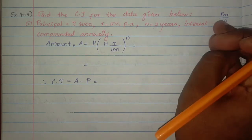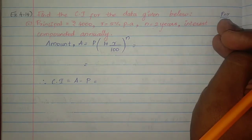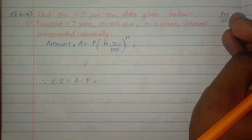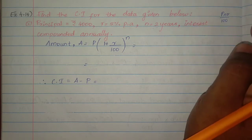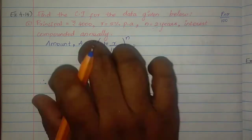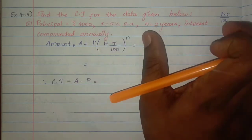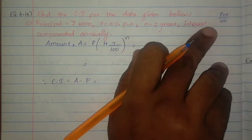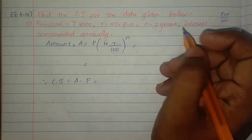If compounded quarterly, in 3 months the principal amount changes. If half yearly, in 6 months the principal amount changes. So we change the policy accordingly — that's compound interest.